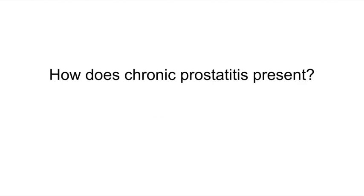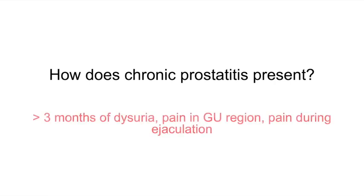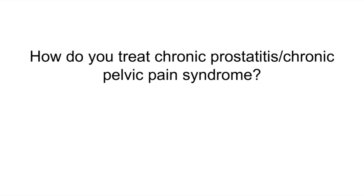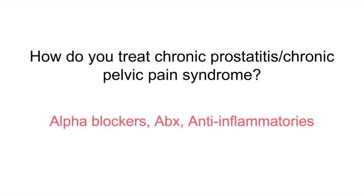How does chronic prostatitis present? The patient will more than likely experience dysuria for more than three months, pain in the genitourinary region, and pain during ejaculation. To evaluate, perform urinalysis and culture before and after a prostate massage; the test usually shows pyuria greater than 20 with no organisms. Treatment for chronic prostatitis or chronic pelvic pain syndrome includes alpha blockers, antibiotics, and anti-inflammatory medications.